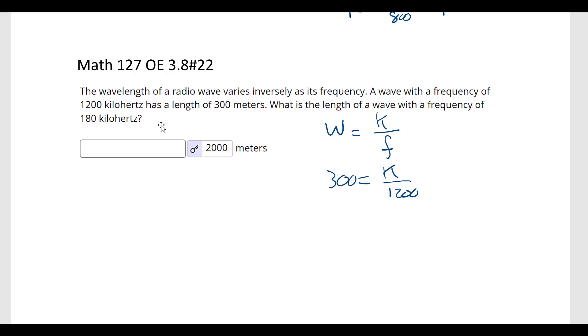So we have 300 equals k over 1,200. And what is the length of a wave with a frequency of 180? So we're going from 300 to 180. So that's getting smaller, so the other one should be getting bigger. So we're going to multiply by 1,200.